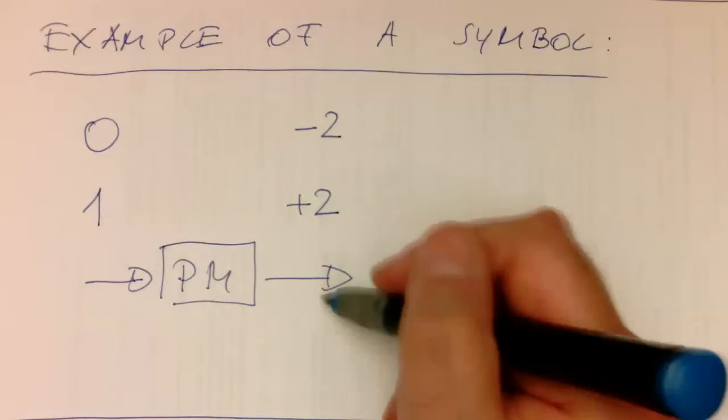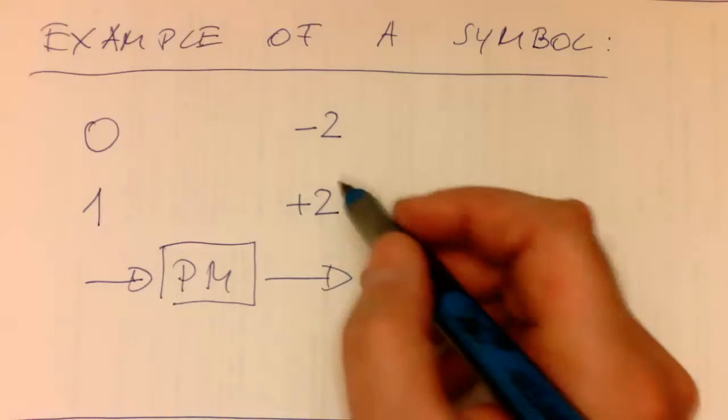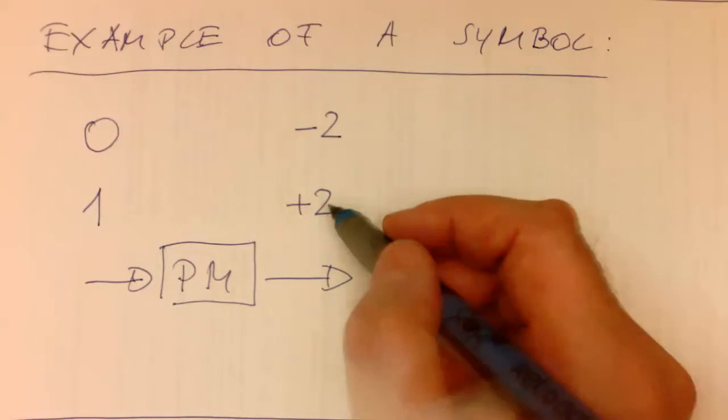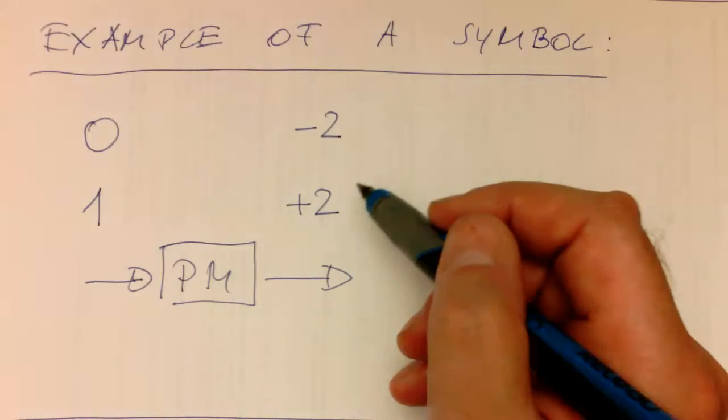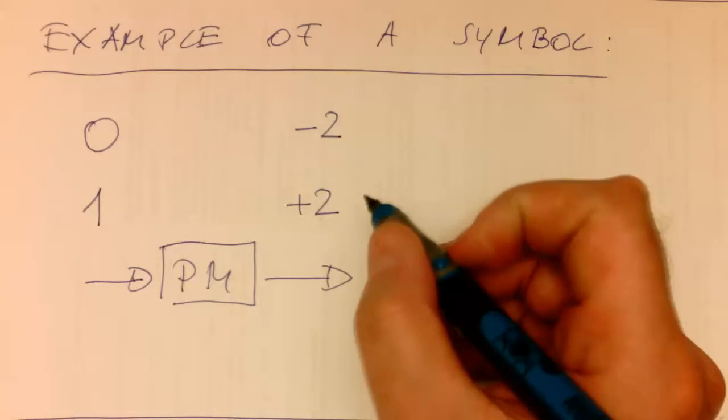In this case here, this is still digital, so therefore this would be still numbers, but we could transmit this directly via transmission line if you want and turn this into voltages.